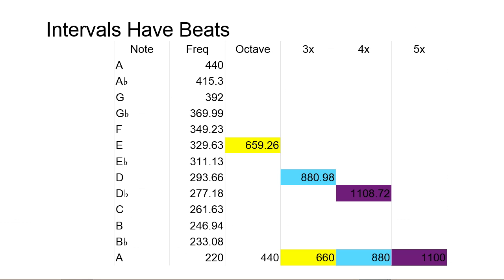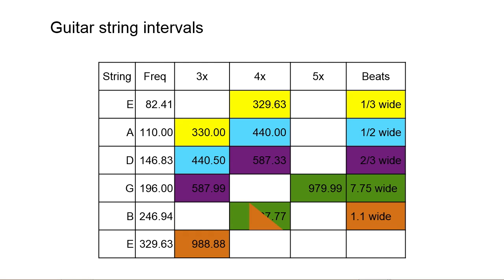Here are some of the notes on the guitar. You'll notice that, for example, 660 Hz in yellow is almost the same as 659.26 Hz in yellow — and that's exactly the kind of relationship that makes it possible to tune guitars. You can't possibly absorb this chart in 15 seconds, but for future reference, this is what I'm about to show you how to do.